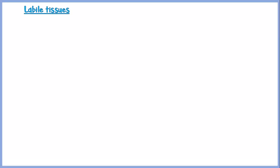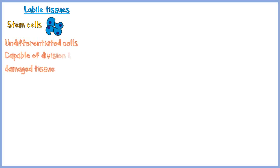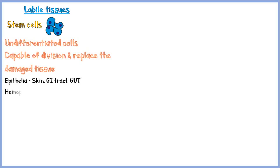Labile tissues contain stem cells. These undifferentiated cells can proliferate rapidly and replace the damaged tissue. These include epithelia like the epidermis of the skin, mucosal lining of the GI tract, and the epithelium of the genitourinary tract, and hemopoietic tissues like bone marrow.